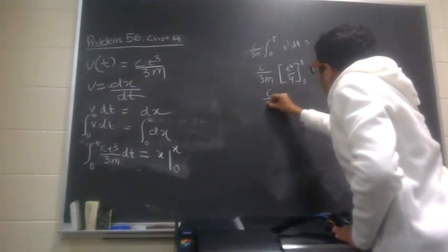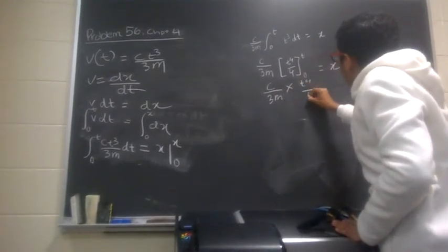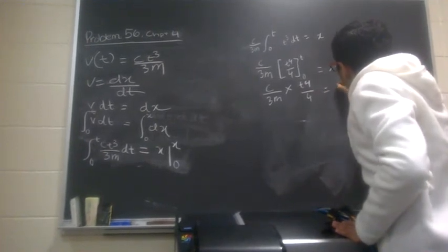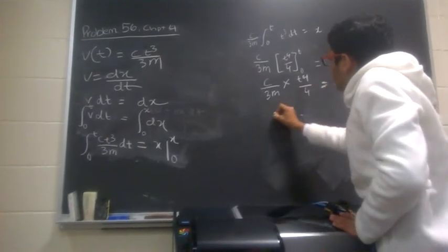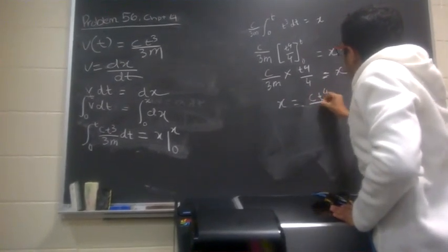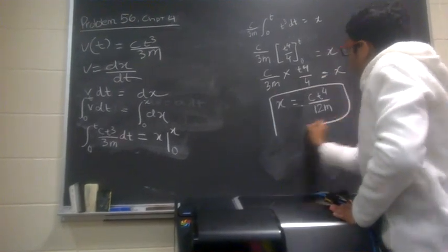So we get c over 3m into t raised to 4 divided by 4 is equal to x. So this gives us the final answer, x is equal to ct raised to 4 divided by 12m, and there you have it.